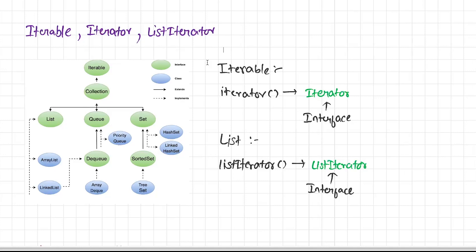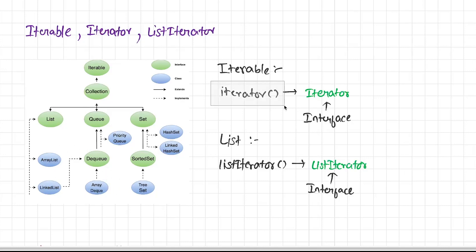Iterable interface defines one method — that is the iterator method. So this means the iterator method is present in the list, queue, and set interfaces. The list, queue, and set interfaces are implemented by ArrayList, LinkedList, ArrayDeque, PriorityQueue, and so on. This means all these collection classes must implement the iterator method.